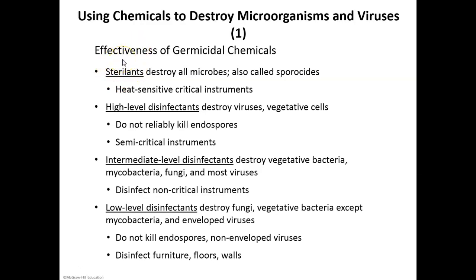The effectiveness of chemicals is dependent on the type of chemicals. We have sterilants, which destroy basically everything. We have high-level disinfectants that can destroy viruses and vegetative cells, but they don't always destroy endospores. We have intermediate-level disinfectants that destroy vegetative cells, certain viruses, mycobacteria, and fungi. And then we have low-level disinfectants, which destroy vegetative cells except for mycobacteria, and they can destroy enveloped viruses but not non-enveloped viruses. They can also destroy some fungi.